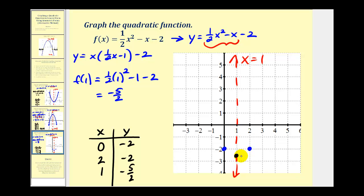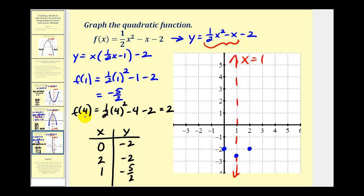These three points are pretty close together, so we may want to find one more point on this parabola. Let's evaluate the function at x = 4: 4² × ½ - 4 - 2 = 8 - 4 - 2 = 2. So f(4) = 2, meaning the parabola contains the point (4, 2). There's also a symmetric point on the other side of the axis of symmetry. Now we can make a nice sketch of our parabola.